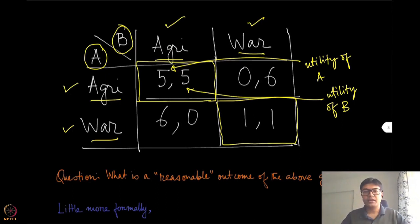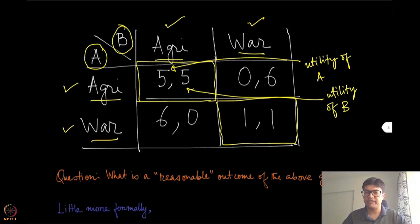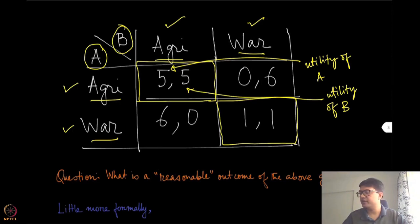When we consider the war situation for both players, the only option they have is to attack the other kingdom and loot their resources. But the trouble is the other kingdom is also investing in war, so they will be able to defend themselves. They will get some amount of payoff — they will not lose everything — but they will get much less than if they were investing in agriculture. That is represented by 1 and 1 in this case.